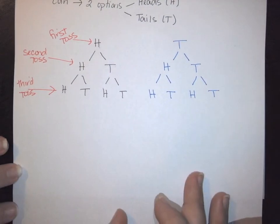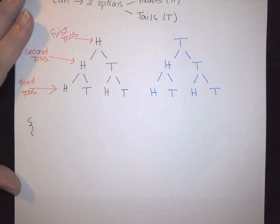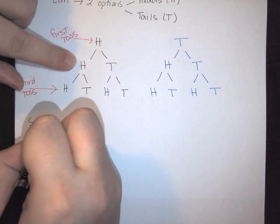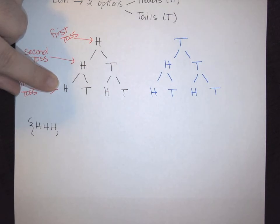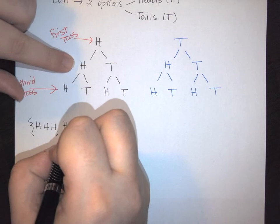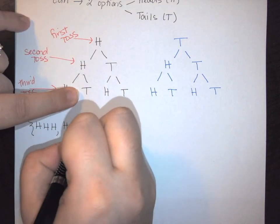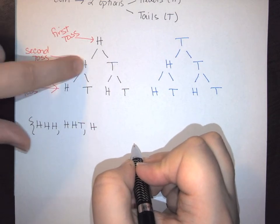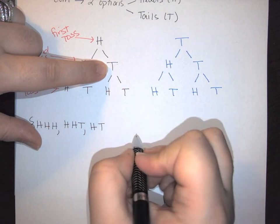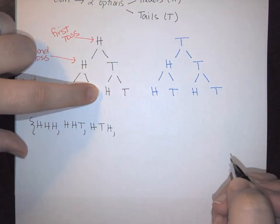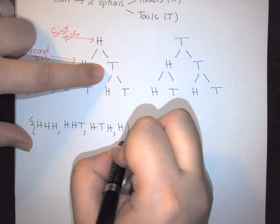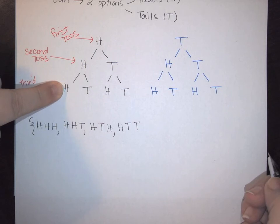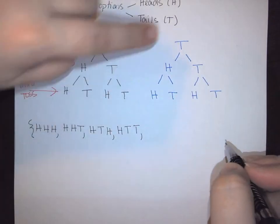To create the sample space from the tree diagram, we trace all paths. Opening our brace: the first set is heads-heads-heads, the second is heads-heads-tails. Moving to the tails branch of the second toss: heads-tails-heads, then heads-tails-tails. That exhausts all paths starting with the first toss being heads.